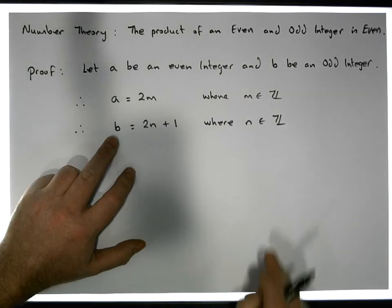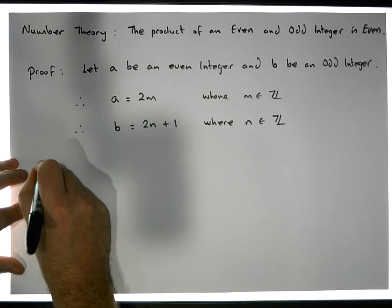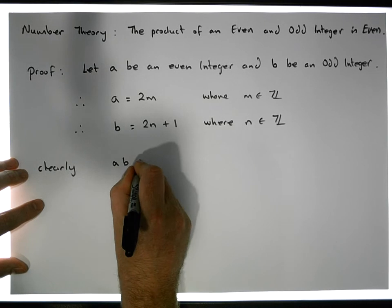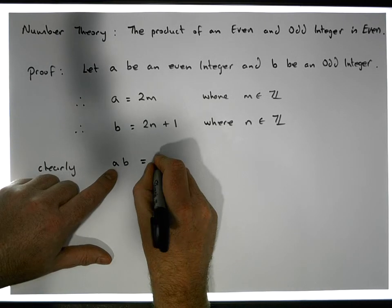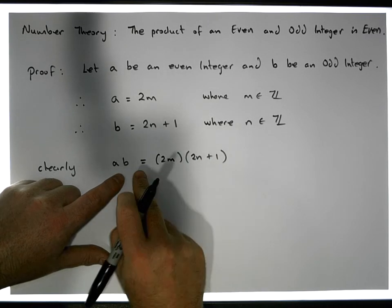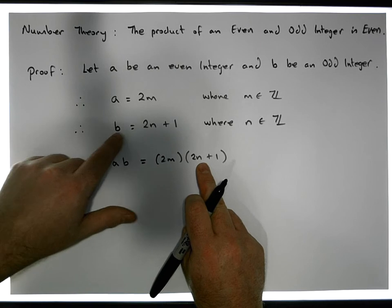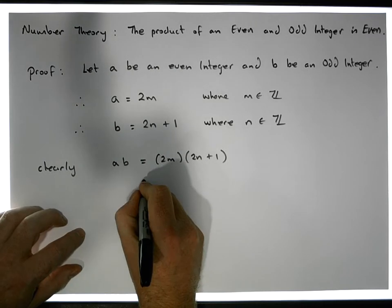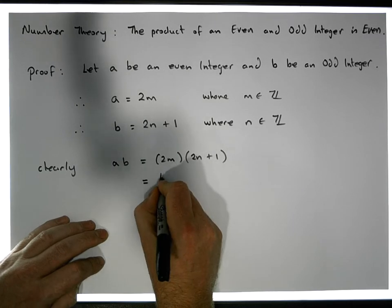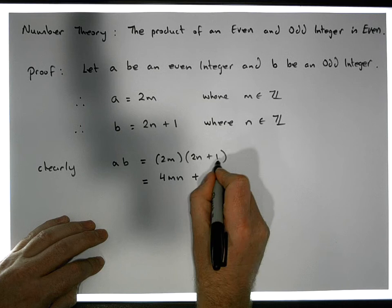We'd like to show that the product of an even and an odd integer is in fact even, so let's try that. Clearly, a times b is equal to 2m times (2n + 1), using our definition of even integer a and odd integer b. Multiplying out the brackets, this gives us 4mn plus 2m.